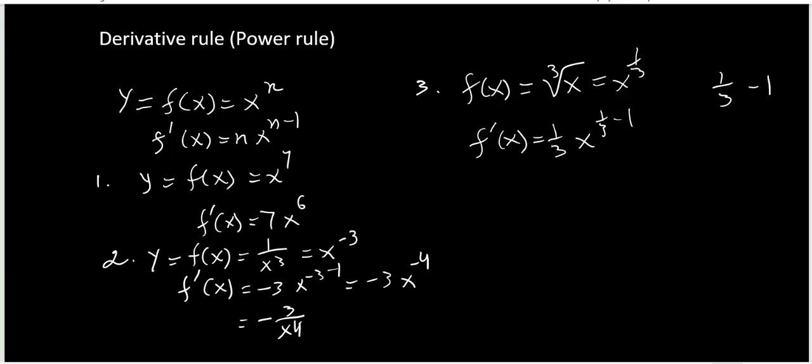1 third minus 1, if you simplify, you get 1 third minus 3 thirds using a common denominator, which gives you 1 minus 3 over 3, meaning negative 2 thirds. So f prime x equals 1 third x to the negative 2 thirds, which can also be written as 1 over 3 x to the 2 thirds.